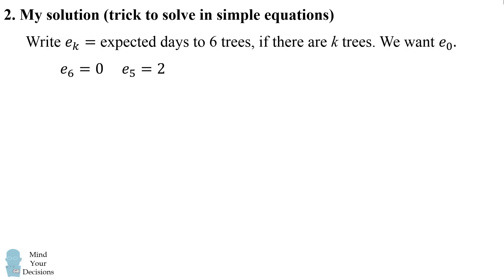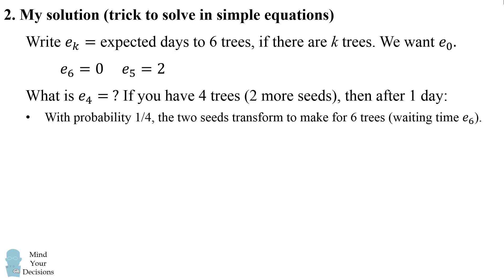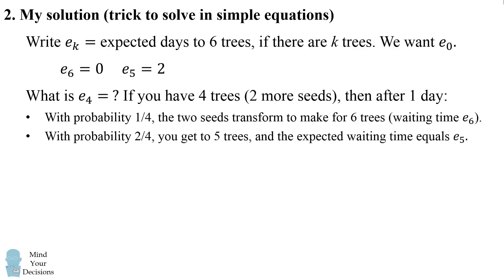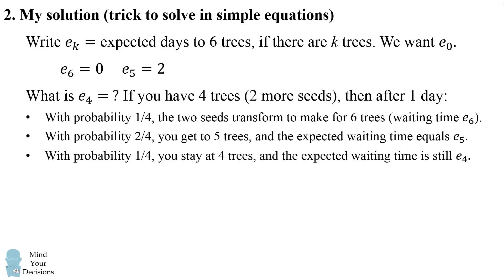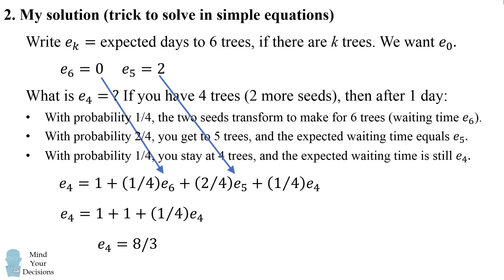Now let's find e_4. With four trees there are two remaining seeds. After one day: with probability 1/4 both seeds transform (reaching six trees, e_6); with probability 2/4 exactly one transforms (giving five trees, e_5); with probability 1/4 neither transforms (staying at four trees, e_4). So e_4 = 1 + (1/4)e_6 + (2/4)e_5 + (1/4)e_4. Substituting the known values and solving gives e_4 = 8/3.